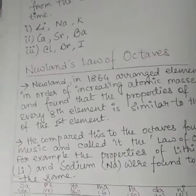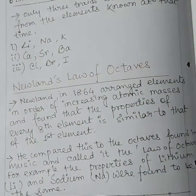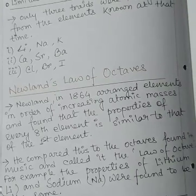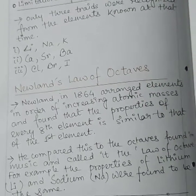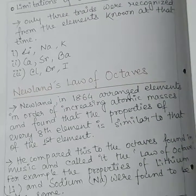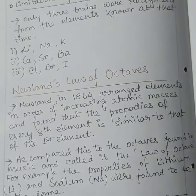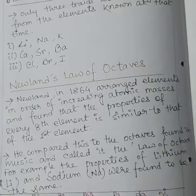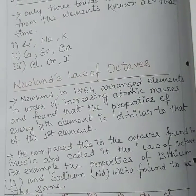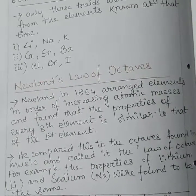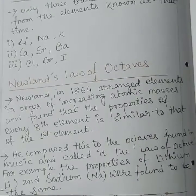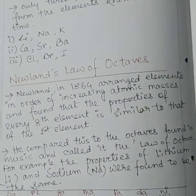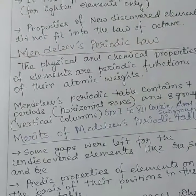Looking at the table, Newlands arranged elements like an octave of music: hydrogen, lithium, beryllium, boron, carbon, nitrogen — then fluorine, sodium, magnesium, aluminum, silicon, phosphorus, sulfur — then chlorine, potassium, calcium. He arranged these elements such that lithium, sodium, and potassium all have repetitive similar physical and chemical properties. Next, the limitation of Newlands' Law of Octaves: it was applicable only up to calcium for the lighter elements, and properties of newly discovered elements did not fit into the law.